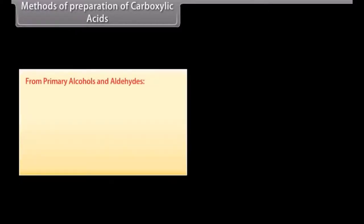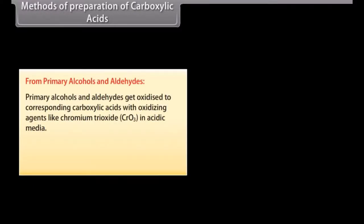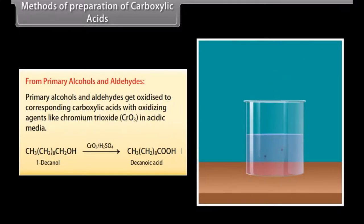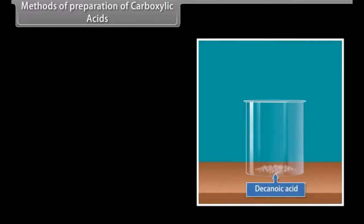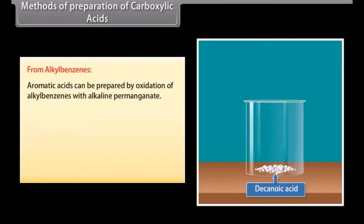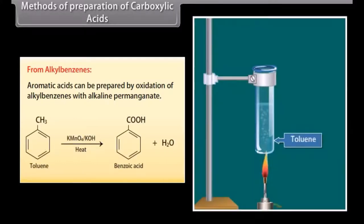Methods of preparation of carboxylic acids. From primary alcohols and aldehydes: Primary alcohols and aldehydes get oxidized to corresponding carboxylic acids with oxidizing agents like chromium trioxide in acidic media. 1-decanol reacts with chromium trioxide in acidic medium and forms decanoic acid. From alkyl benzenes: Aromatic acids can be prepared by oxidation of alkyl benzenes with alkaline permanganate. Toluene reacts with potassium permanganate in alkaline medium and forms benzoic acid.